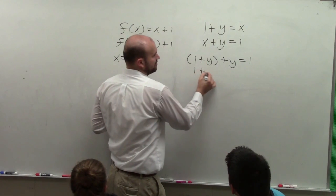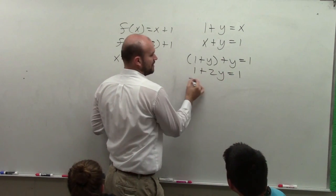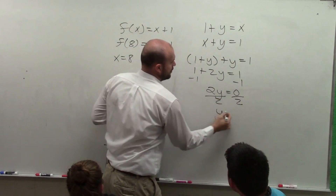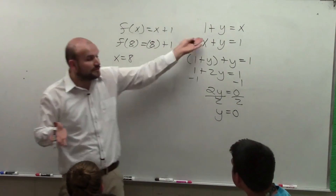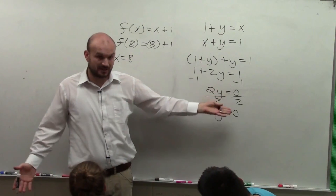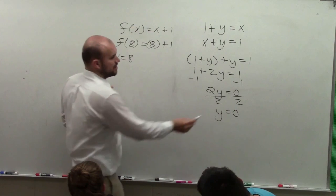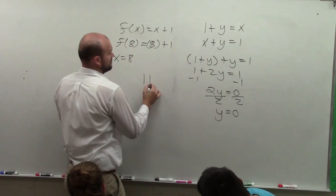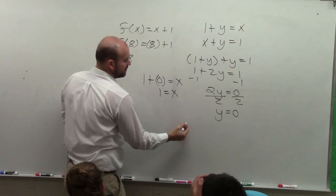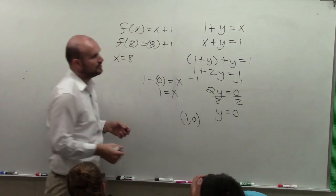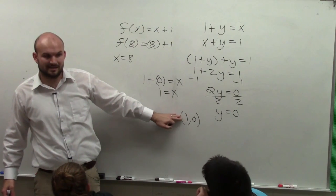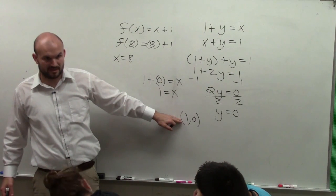It's one plus two y equals one. Solve for y — subtract one on both sides. Two y equals zero, divide by two. Y equals zero. So the point where these two lines intersect is when y equals zero. Now plug zero in for y: one plus zero equals x, so x equals one. My coordinate point is one comma zero — that's where these two lines would intersect. Since they intersect at one point, this would be called an independent consistent system.